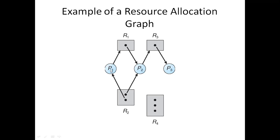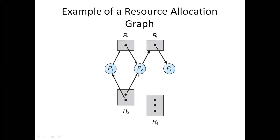For example, P1 is waiting for resource R1, and R1 is assigned to P2. P2 is waiting for resource R3, and R3 is assigned to P3. There are two instances of R2 — one assigned to P1, one requested by P2. Since there are two instances of R2 assigned to two different processes, there is no cycle, and if there is no cycle, there is no deadlock.